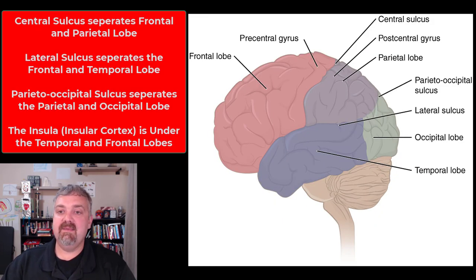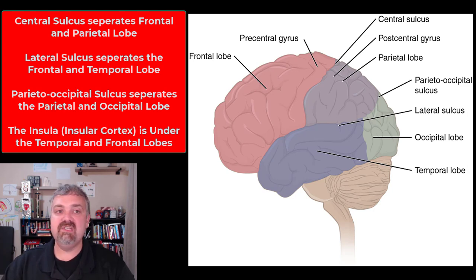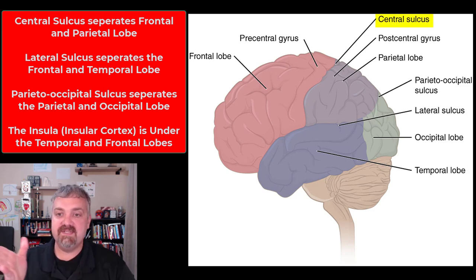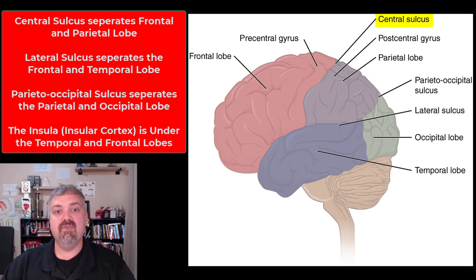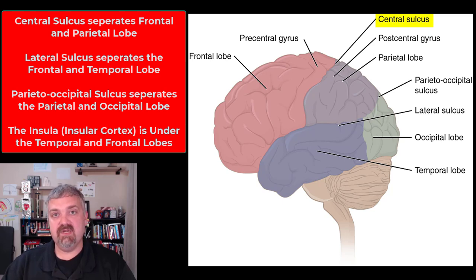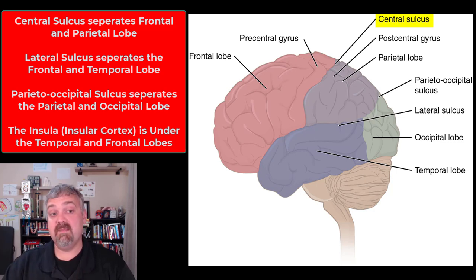Here we see the actual names of some of these valleys and ridges and why they're important. The most important one is the central sulcus, because it divides the frontal lobe from the parietal lobe. The frontal lobe is where you have your primary motor cortex — it's called the precentral gyrus. The parietal lobe is where you have your primary sensory cortex — it's the postcentral gyrus. So the central sulcus is the most important one.